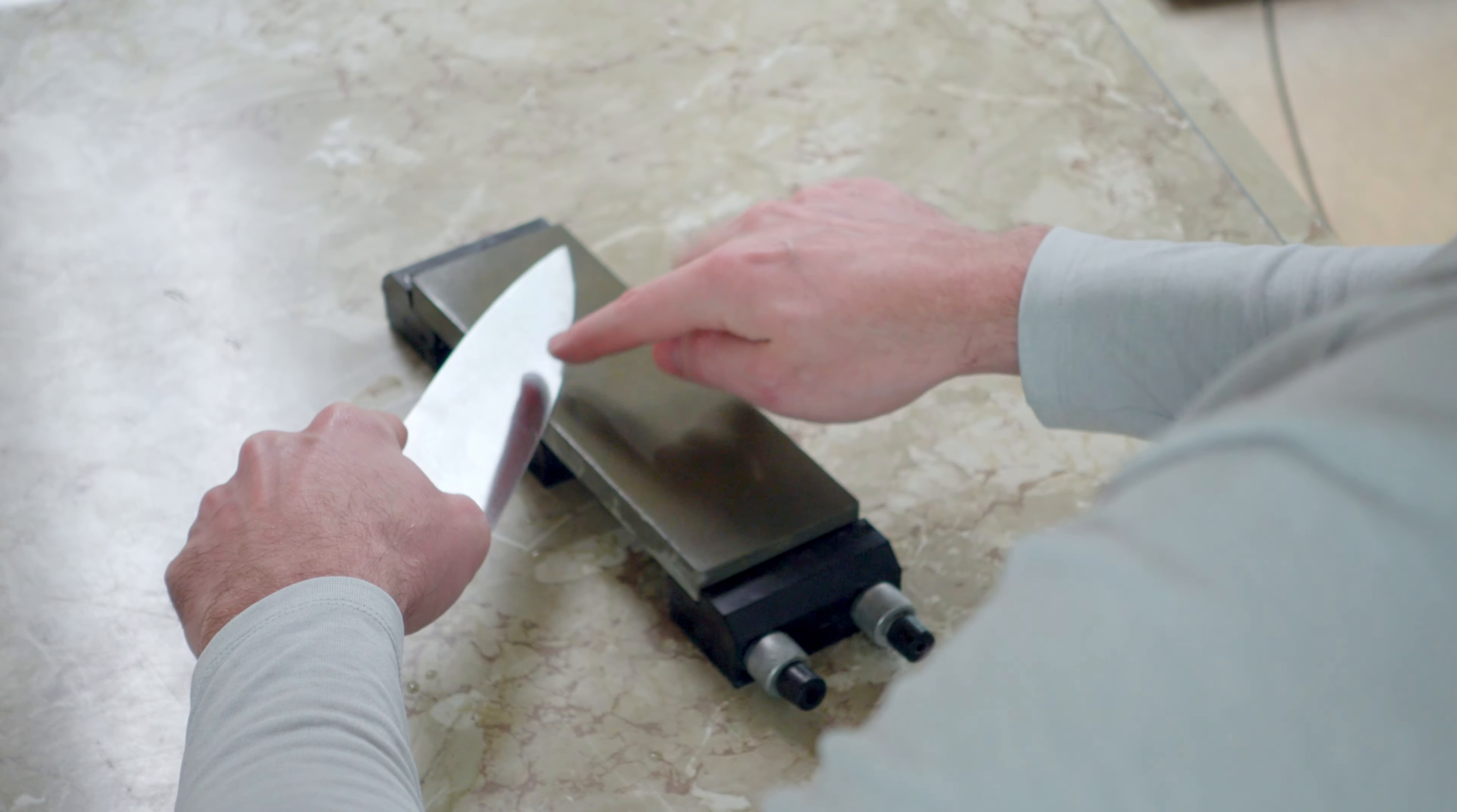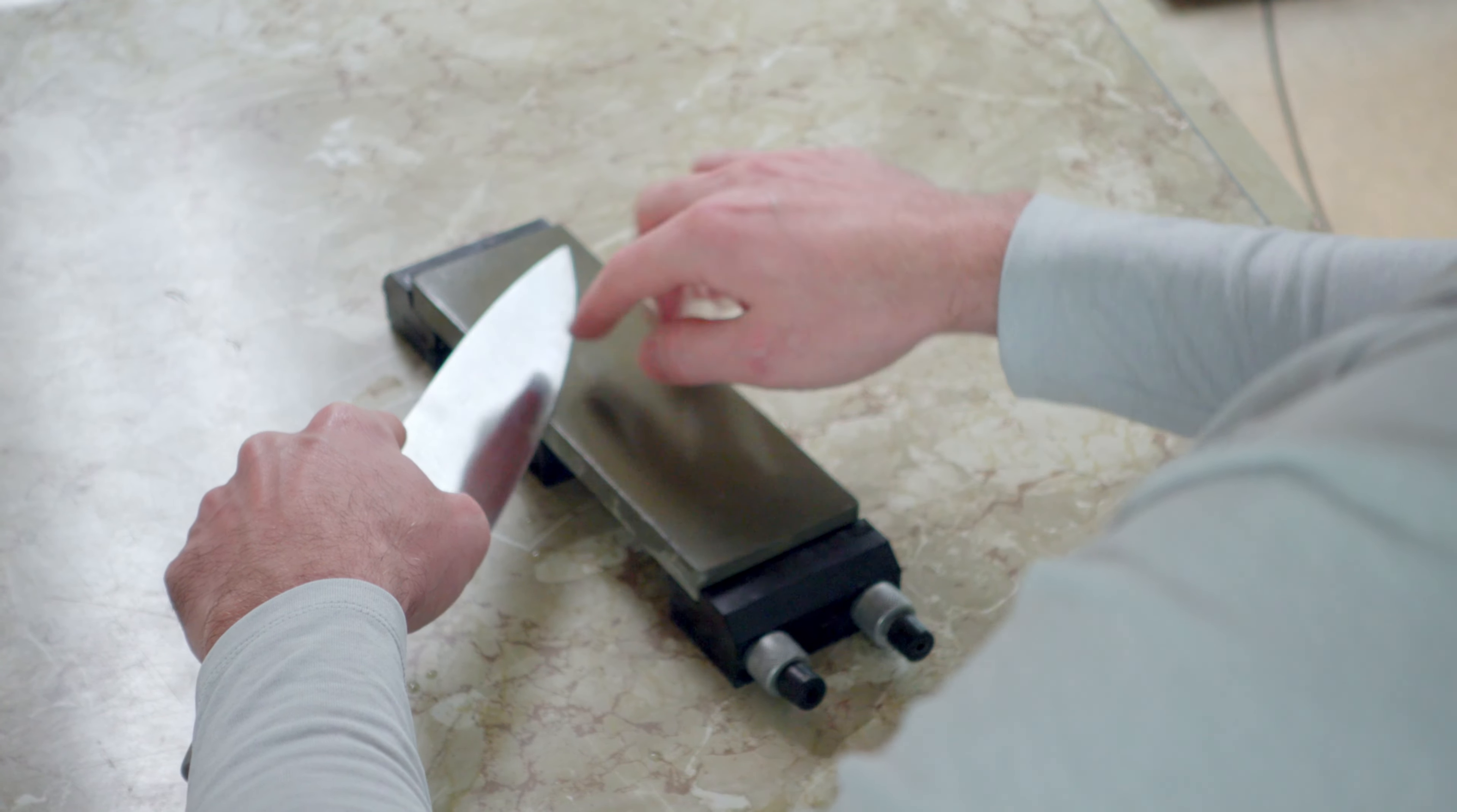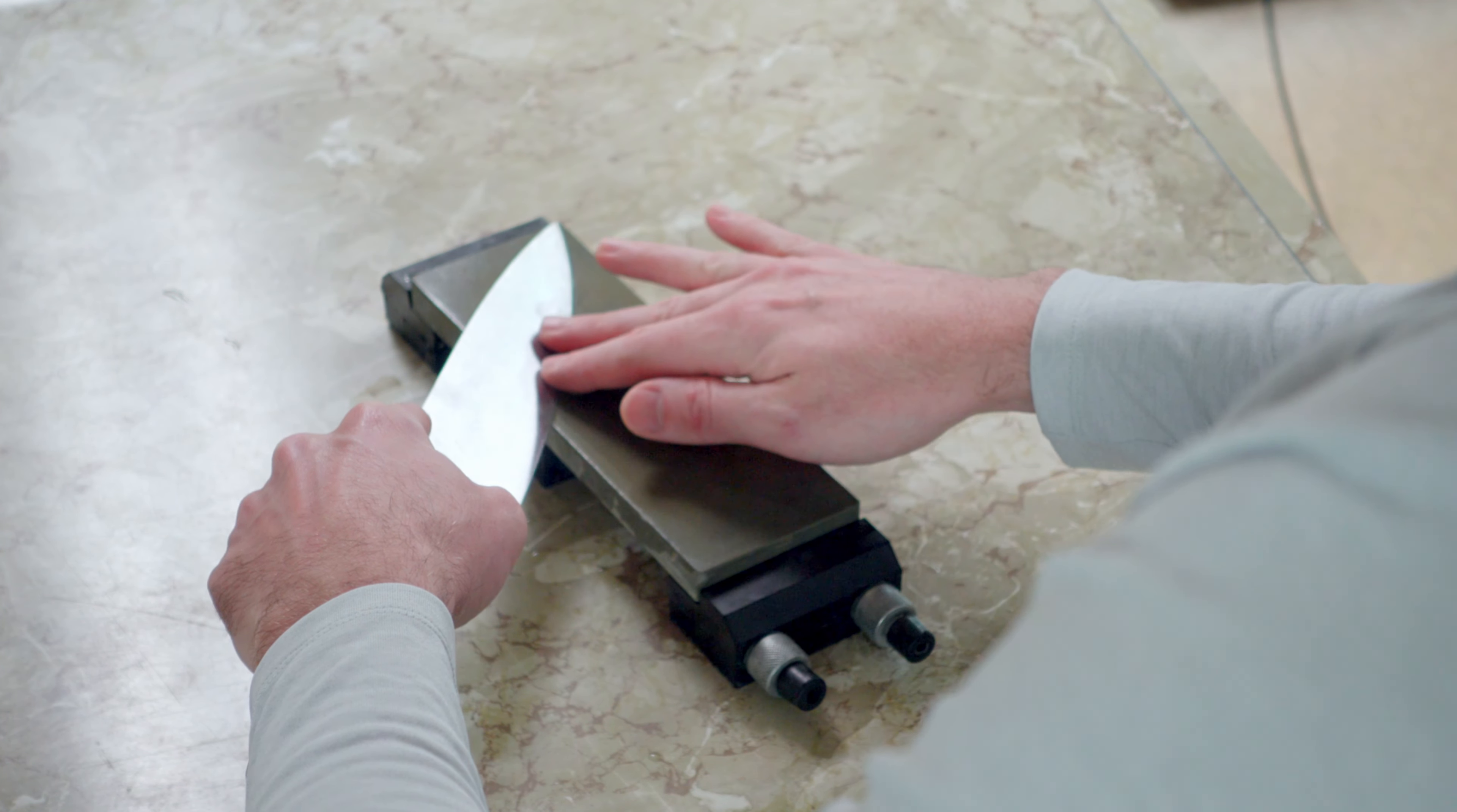All right, now I'm almost to the part where the knife is pretty straight. I'm going to lower it a little bit more. Once you see there's no gap between the edge of the knife and the stone, you're good. Now I'm pretty much home free where I can just do the rest of the knife edge.